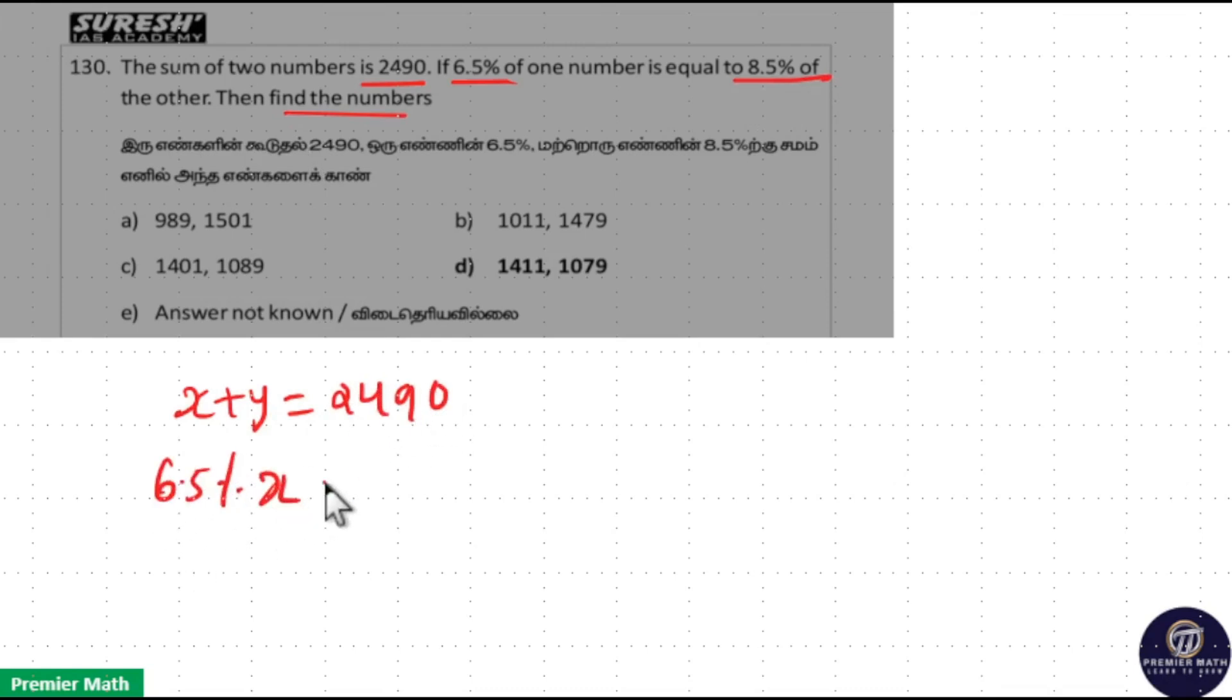6.5% of one number equals 8.5% of the other number. Here the percentage and decimal point cancel. 5 goes 13 times in 65 and 5 goes 17 times in 85.